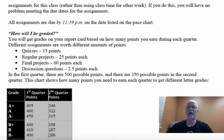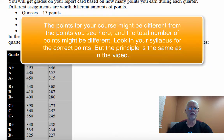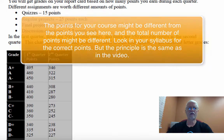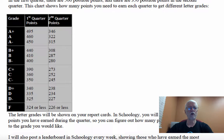Now let's talk about grading. Grading in this class is going to be a little bit different than in other classes. Instead of getting a grade on each assignment and averaging them together, you're going to earn points for each assignment, each project, each quiz. In the first quarter there are 500 possible points, and 350 possible points in the second quarter. I've got a chart that shows you, at the end of the quarter, what your grade and letter grade will be based on your total points.